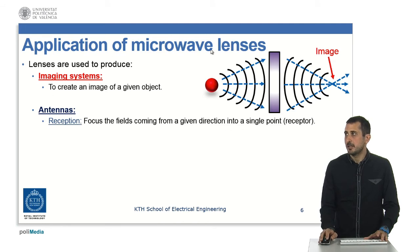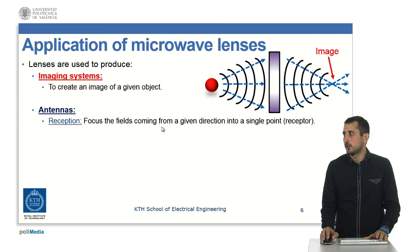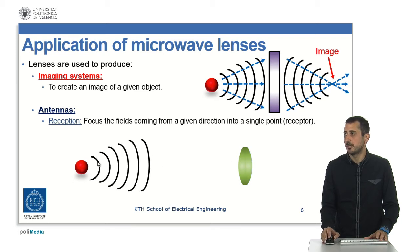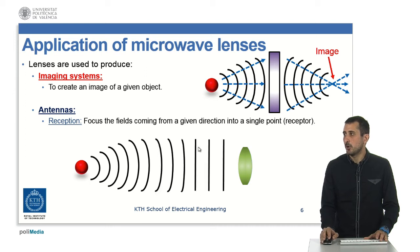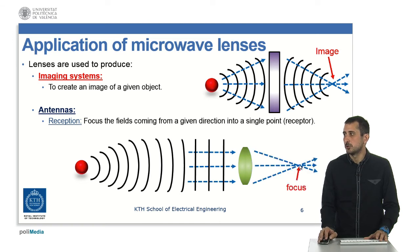The other big type of application is what we call antennas, which can be used in reception or in transmission. In reception, what we try to do is focus all the fields coming from one direction into a single point called a receptor. Imagine an object emitting electromagnetic waves, and we have a lens very far away in terms of wavelength. The wave emitted becomes very flat — what we call a plane wave — and this plane wave is incident on our lens, which finally converges to a focus where we place our antenna to collect more power.